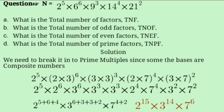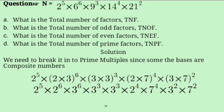We rearrange and collect like terms: 2 raised to 5 times 2 raised to 6 times 2 raised to 4, then 3 raised to 6 times 3 raised to 3 times 3 raised to 2, then 7 raised to 4 times 7 raised to 2. Adding the exponents: 2 gets 5+6+4=15, 3 gets 6+3+2=14 — wait, 6+3+3+2=14, and 7 gets 4+2=6. So the result is 2 raised to 15 times 3 raised to 14 times 7 raised to 6.